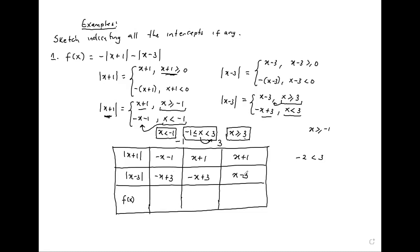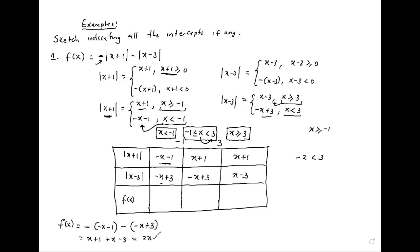Now combining them to form f(x): when x is less than negative 1, f(x) equals negative x minus 1, minus negative x plus 3, which gives x plus 1 plus x minus 3, equaling 2x minus 2. When x is between negative 1 and 3, f(x) equals x plus 1, minus negative x plus 3, giving negative x minus 1 plus x minus 3, which equals negative 4.